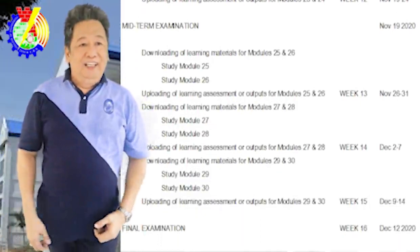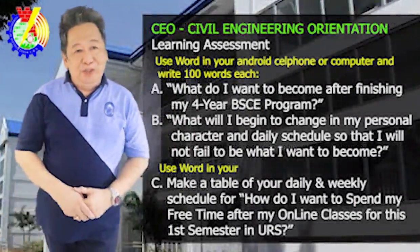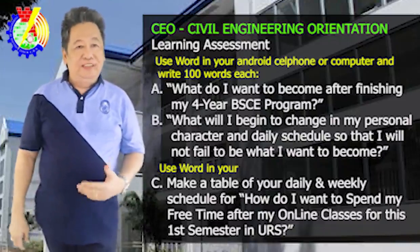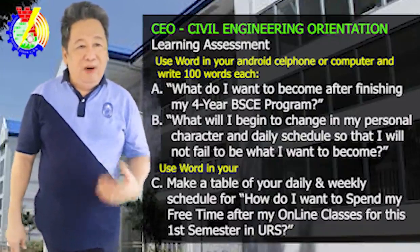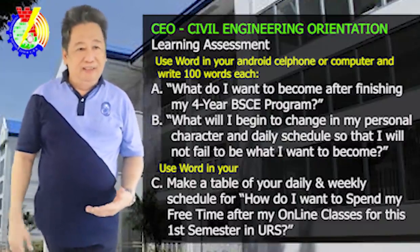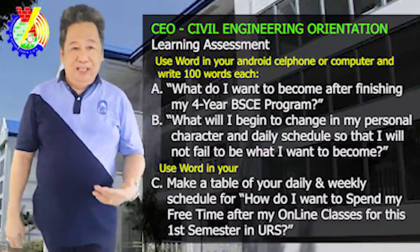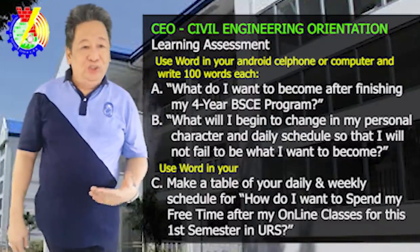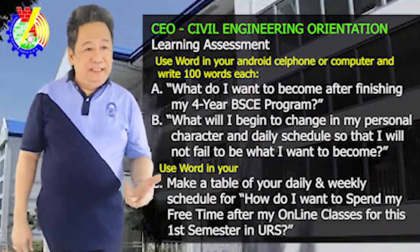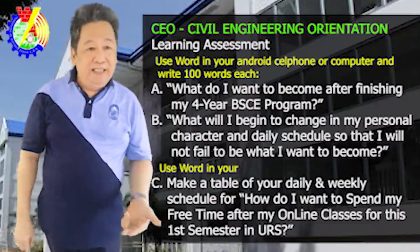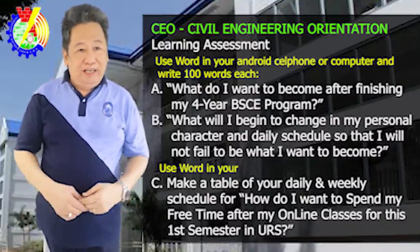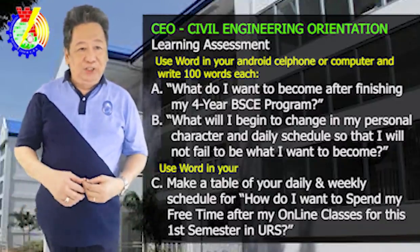Here's your first assignment. Use your Android cell phone or computer word processing and write at least 100 words each. Letter A: what do I want to become after completing my four-year BS Civil Engineering program? Letter B: 100 words — what will I begin to change in my personal character and daily schedule so that I will not fail in becoming what I want to become? And for the third, using your Excel spreadsheet, make a table of your daily and weekly schedule showing how to spend your free time after Google Classroom online learning sessions for this semester.